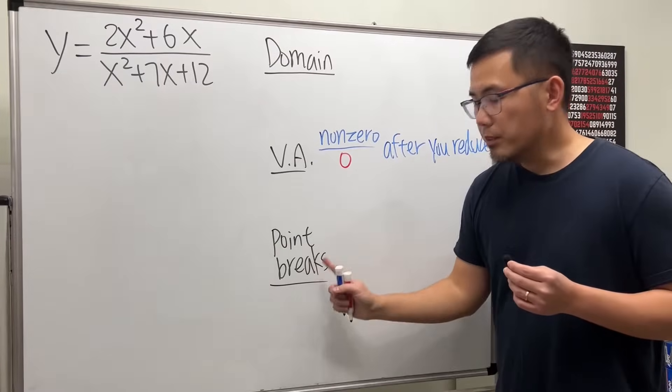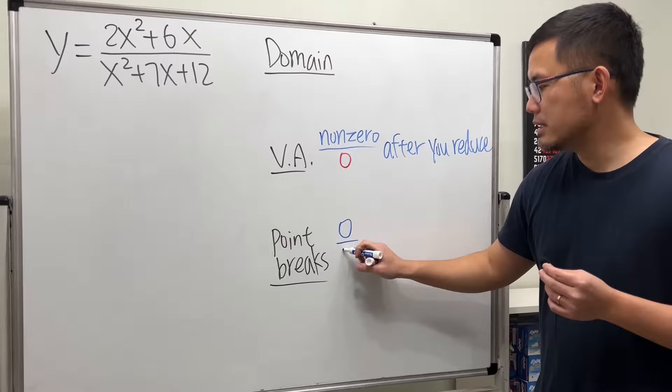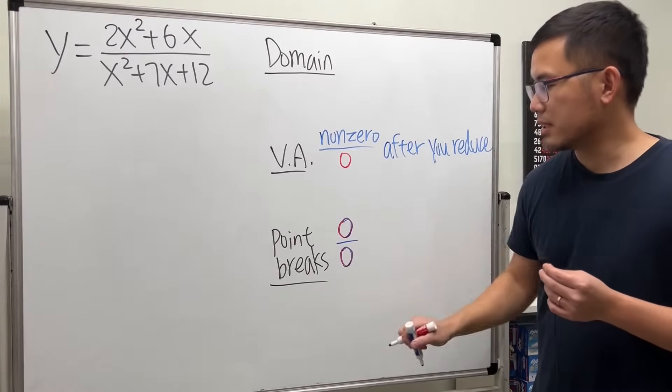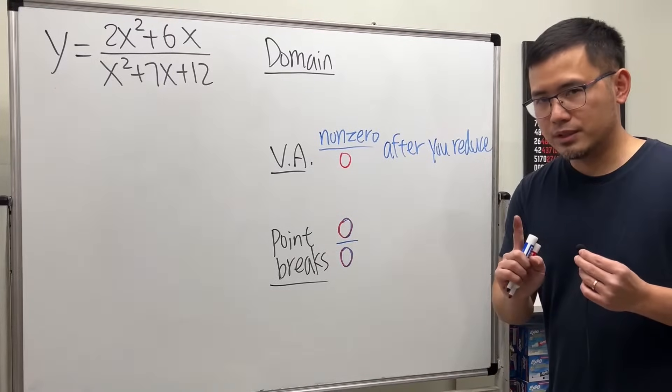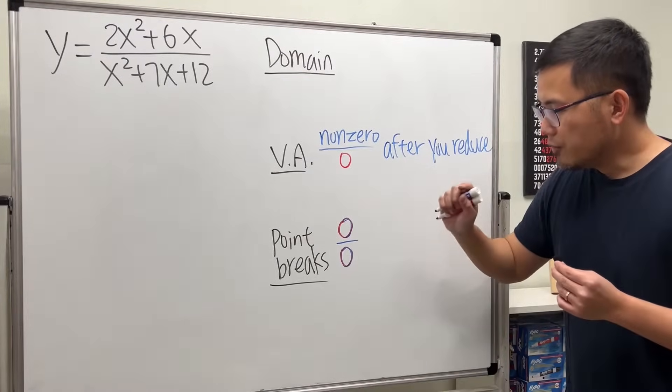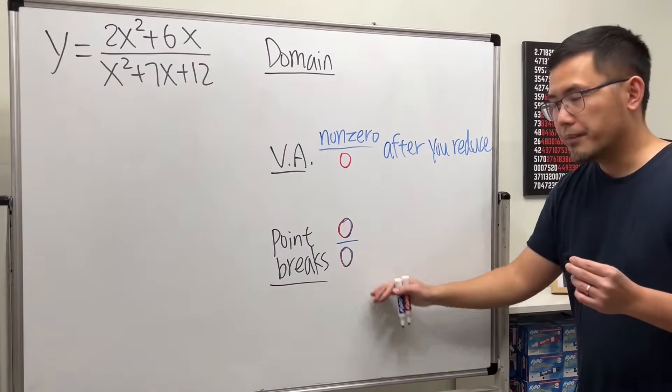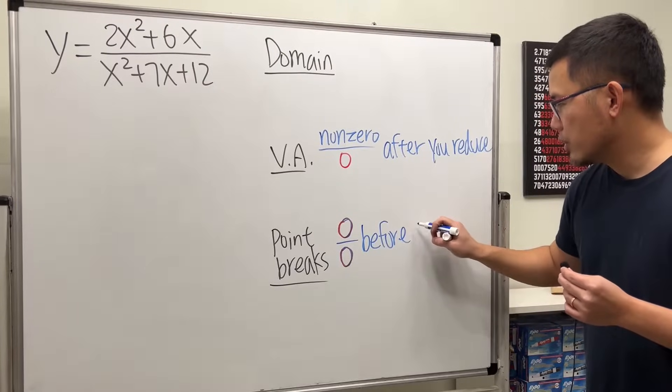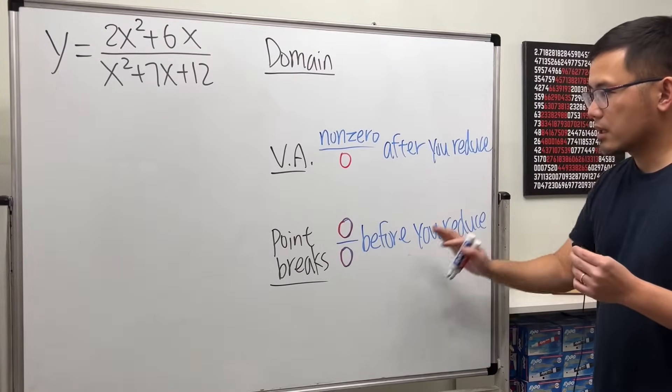And then for the point breaks, pay attention to the following. Zero over zero. Zero on the top and also zero on the bottom. That is what you pay attention to. But be careful with this. You want to find the x-value that will give you zero over zero. That's before you reduce.